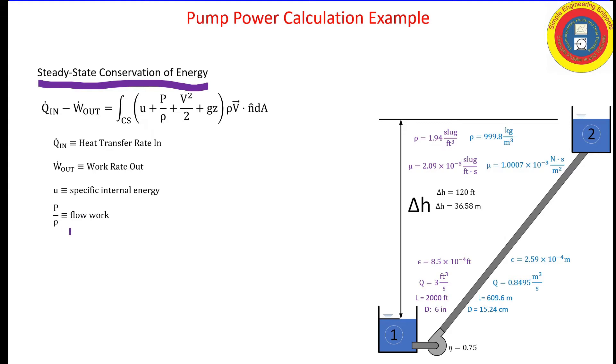P over rho is the flow work. You may recall from thermodynamics that if you add the specific internal energy and the flow work, you get specific enthalpy. We are not going to be making use of this in this example because it's more convenient to keep them separate. We also have a kinetic energy term per unit mass and a potential energy term per unit mass.